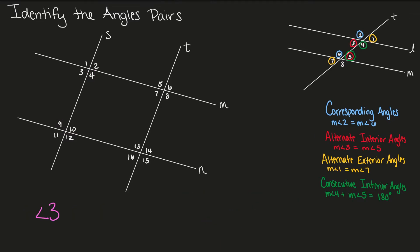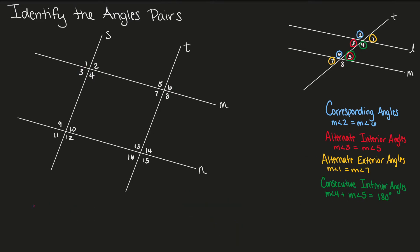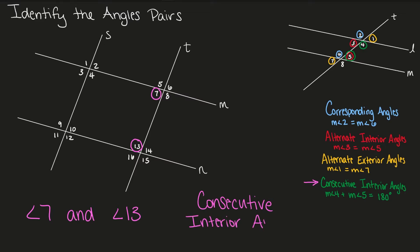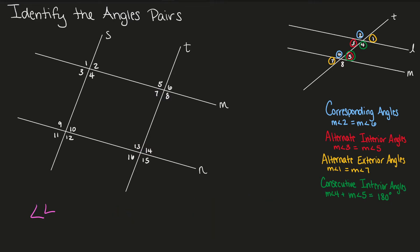Now let's look at angle 6 and angle 3. Angle 6 and angle 3 are on opposite sides of our transversal and on the outside of our parallel lines. Therefore, angle 6 and angle 3 are alternate exterior angles. Next, we have angle 4 and angle 8. Angle 4 and angle 8 are on the same side of our transversal and on the same side of our parallel lines as well, so they are corresponding angles.